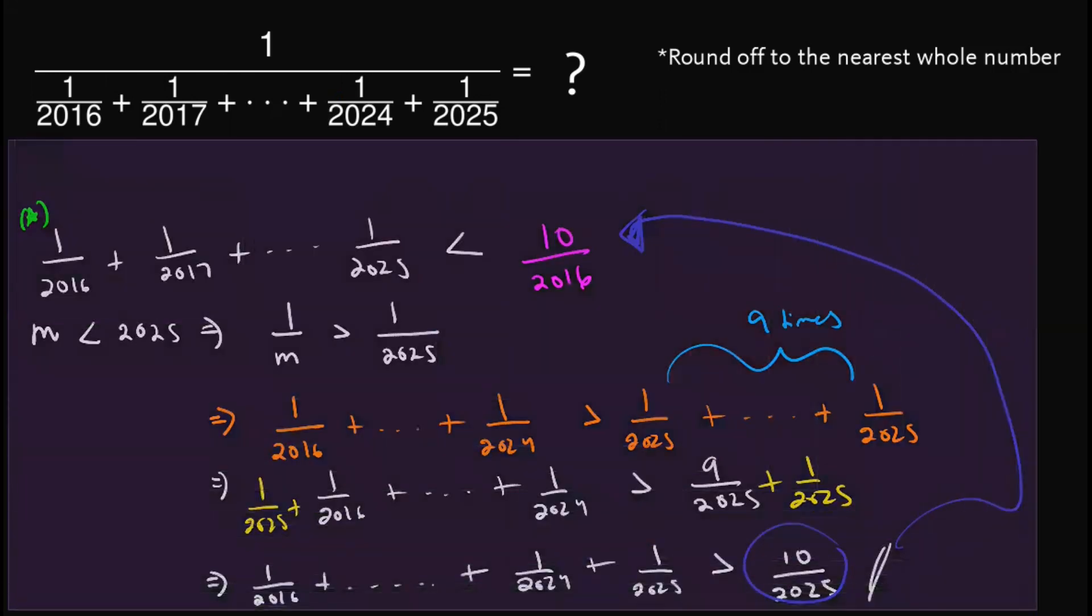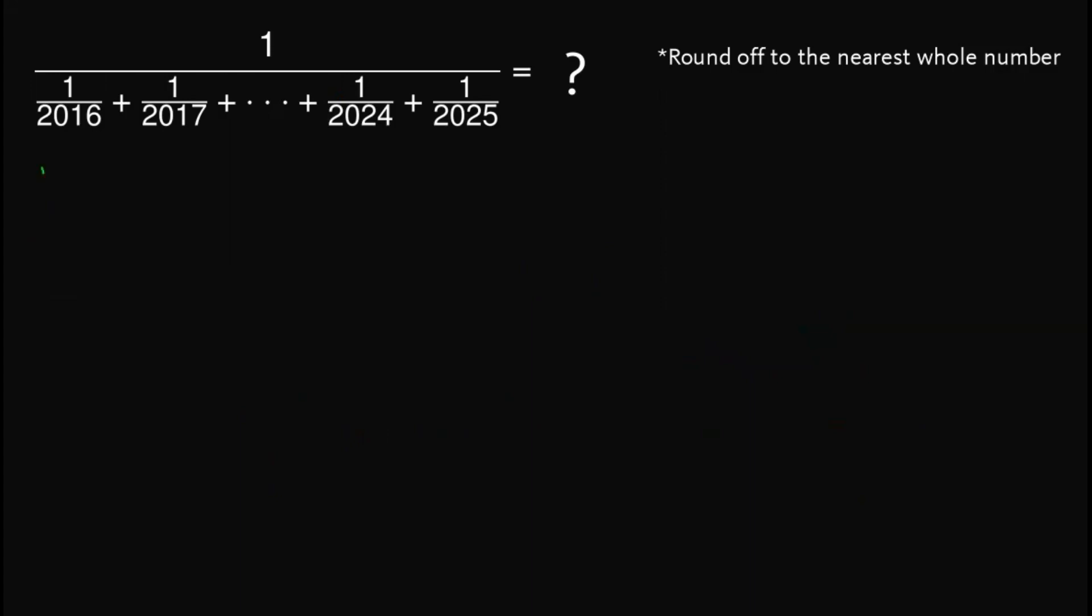Combining everything that we have so far, we have this inequality: 1 over 2016 plus 1 over 2017 up until 1 over 2025 is bounded by 10 over 2025 and 10 over 2016.